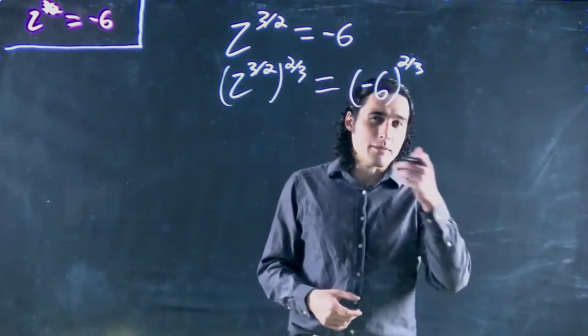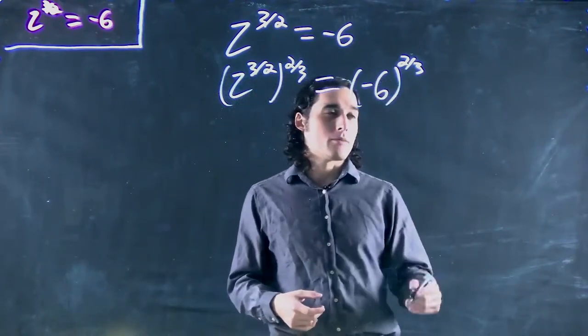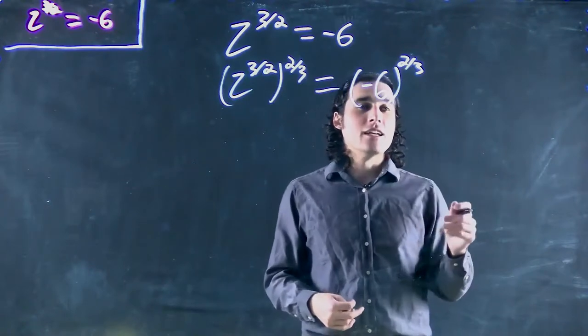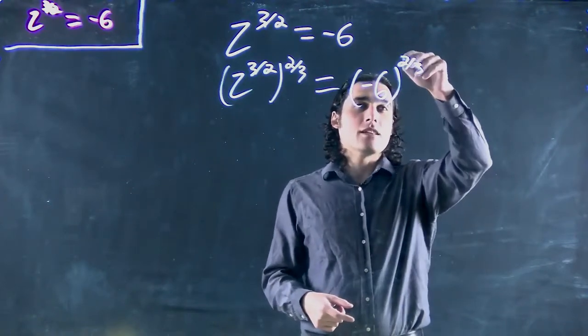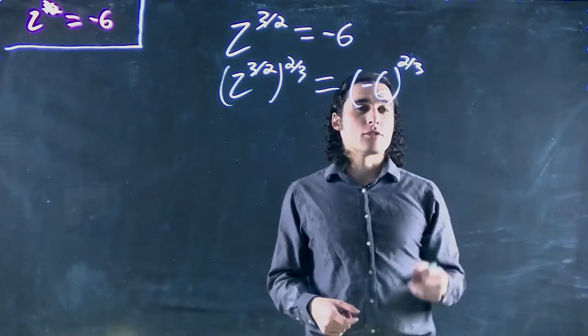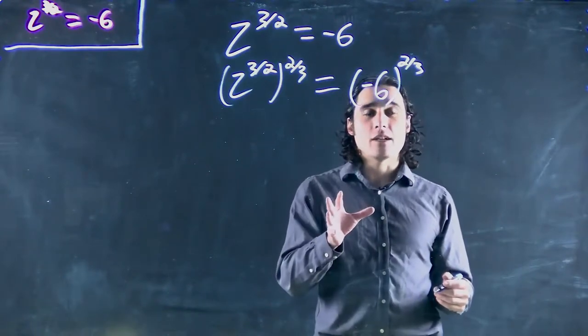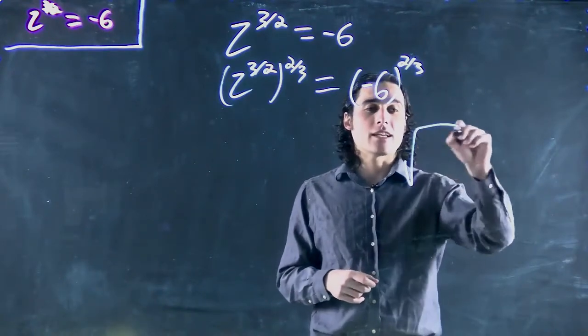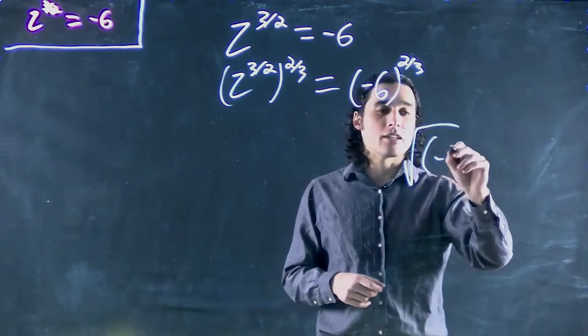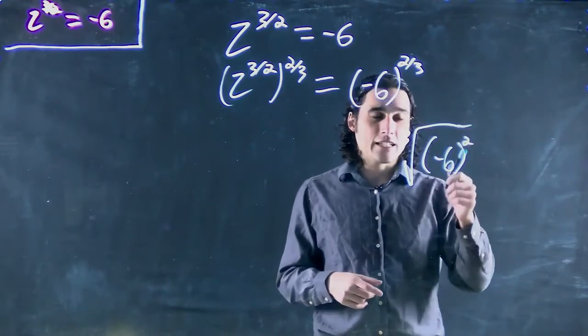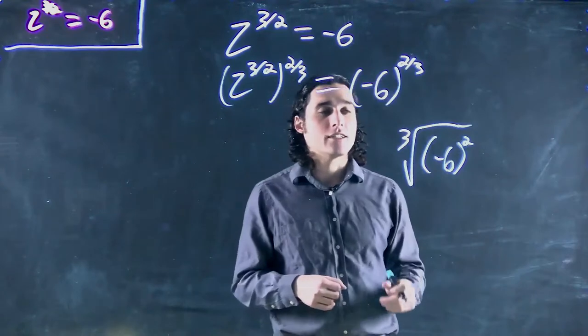And one thing we might be tempted, from that first video, remember we said you can rewrite these as the top being the number that's squared and the bottom being the root. That doesn't work for negative numbers. You'd be tempted to rewrite this as the cube root of negative 6 squared and evaluate it. You can't do that for these cases.